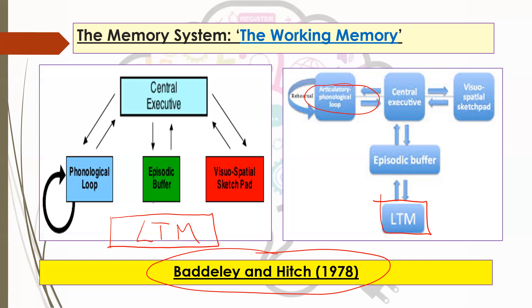One key part of the model not shown in the image is the long-term memory — add that in on your diagram now. What I want you to do is add arrows coming down from the episodic buffer and arrows going back up, because information is being sent down to the long-term memory and also retrieved back from it — it's a two-way process. Similarly, information is sent down to the phonological loop, which does its thing, and then sends it back up to the central executive.